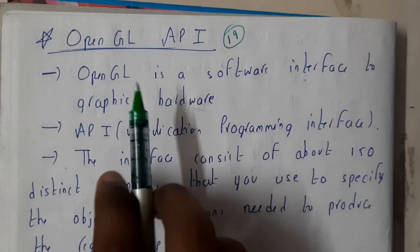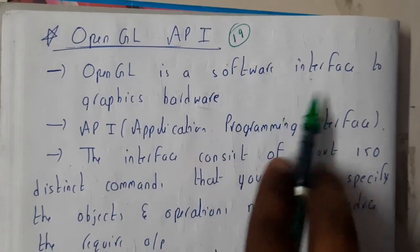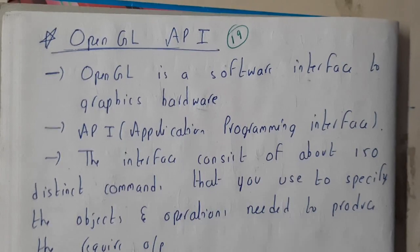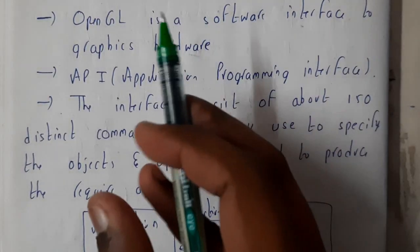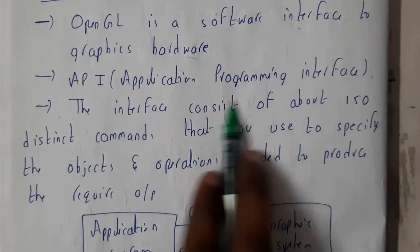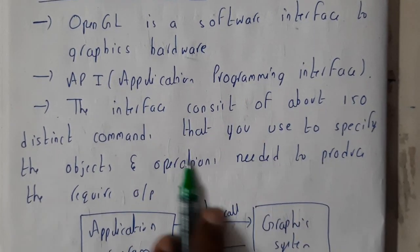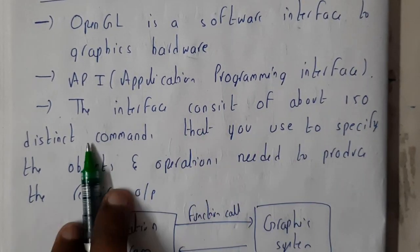Now let us go through the points. OpenGL is a software interface to the graphical hardware, used to interact with the graphical hardware. API is nothing but Application Programming Interface. The interface consists of about 150 distinct commands.